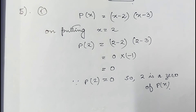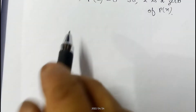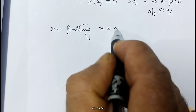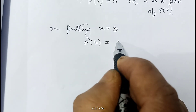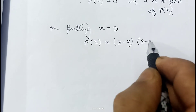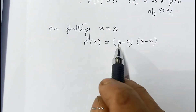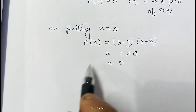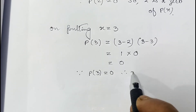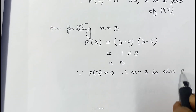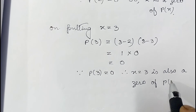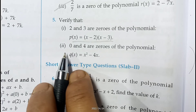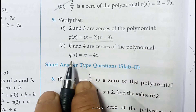Now checking whether 3 is a zero: on putting x equals 3, p(3) equals (3 minus 2) into (3 minus 3), which is 1 into 0, equals 0. Since p(3) equals 0, therefore x equals 3 is also a zero of p(x). That means both 2 and 3 are zeros of the given polynomial p(x) = (x minus 2)(x minus 3).